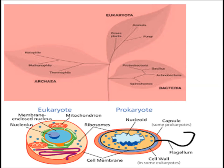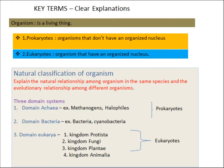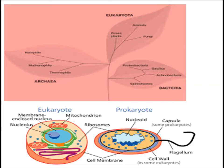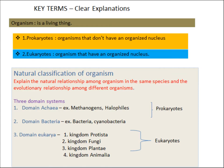Organisms in domain Archaea have the ability to live in extreme environmental conditions like deserts, hot springs, ocean beds, and volcanoes. Methanogens and halophiles are examples of Archaea. These organisms are not sensitive to most antibiotics, so we cannot destroy them with antibiotics.